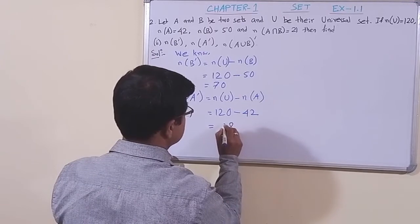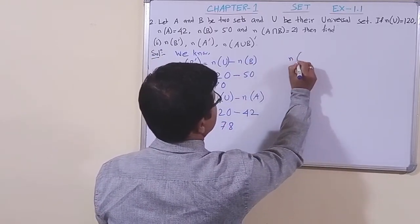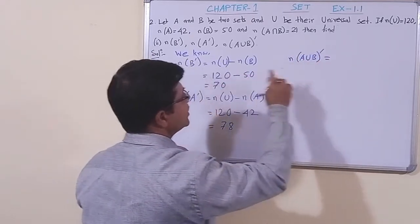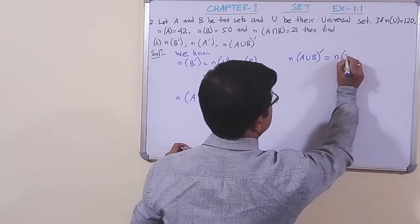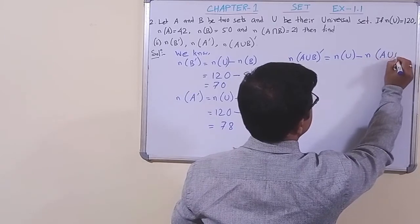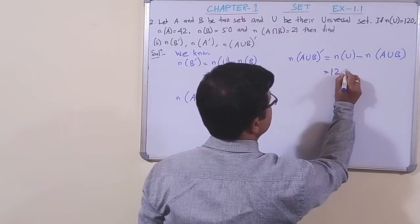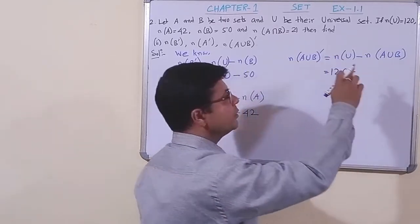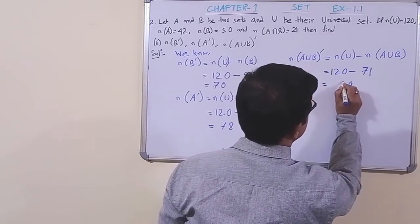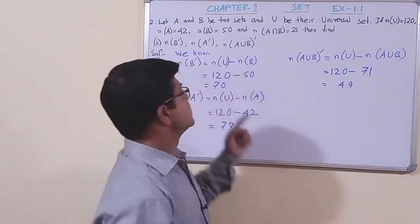Now for n(A∪B)', we write n(U) − n(A∪B). From question number one, n(A∪B) = 71, so n(A∪B)' = 120 − 71 = 49.